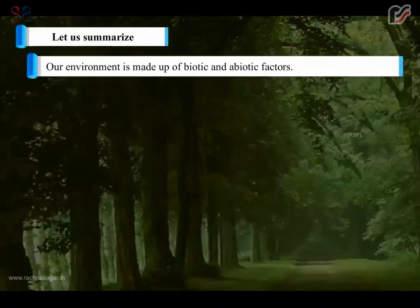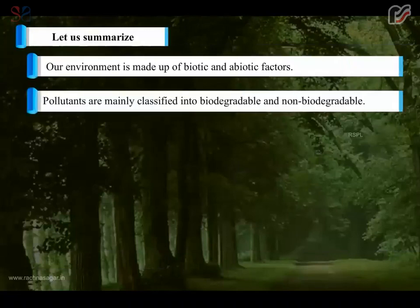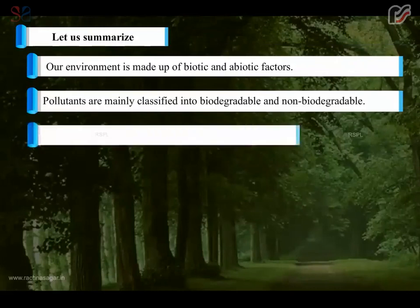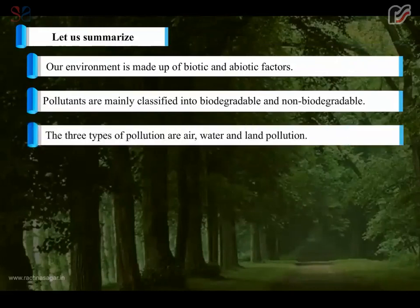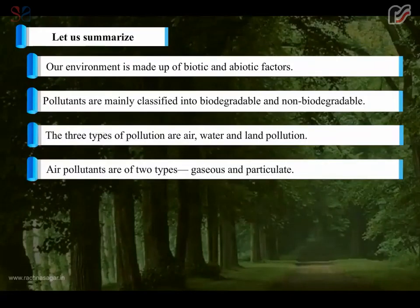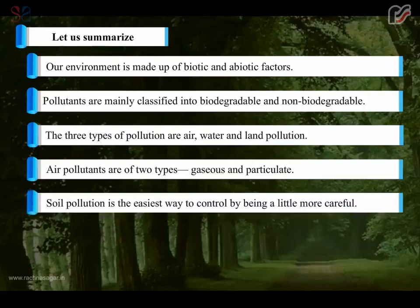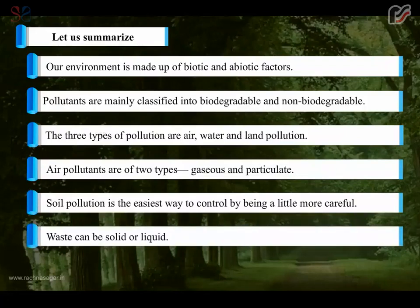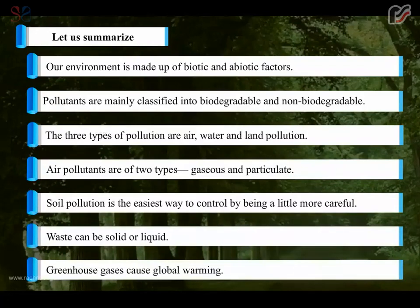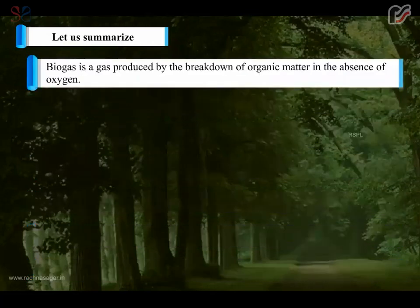To summarize: our environment is made up of biotic and abiotic factors. Pollutants are mainly classified into biodegradable and non-biodegradable. The three types of pollution are air, water, and land pollution. Air pollutants are of two types: gaseous and particulate. Soil pollution is the easiest to control by being a little more careful. Waste can be solid or liquid. Greenhouse gases cause global warming. Biogas is a gas produced by the breakdown of organic matter in the absence of oxygen.